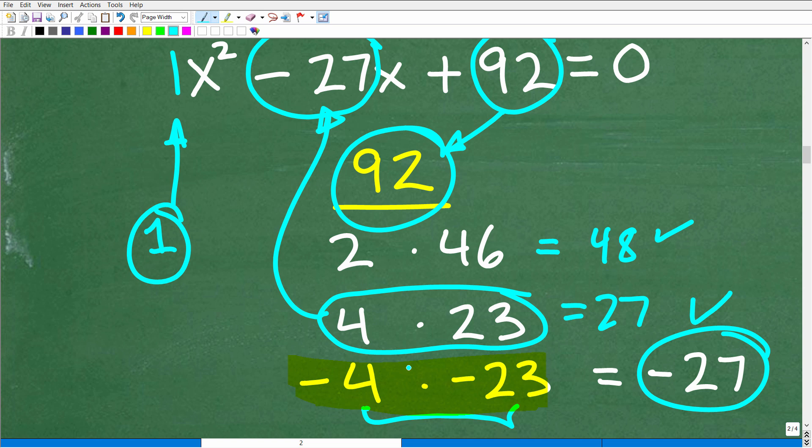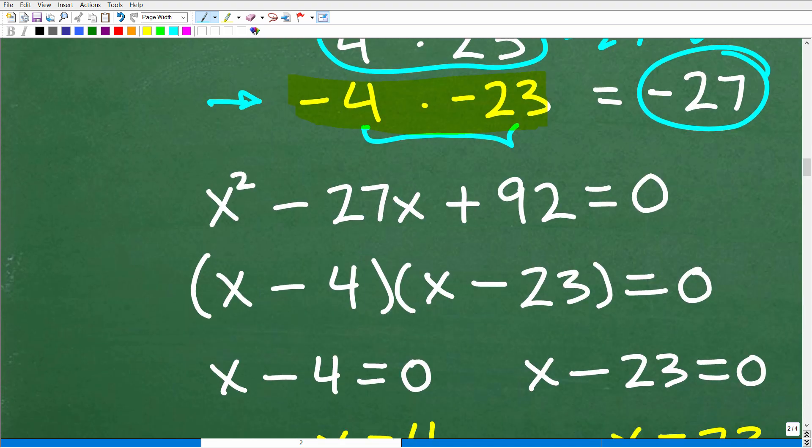But when I add these up, I get negative 27. So these right here are my, the answers to my factor. Okay. Or my factors, what we call linear factors. All right. So what does that mean? Well, negative four and negative 23 add up to negative 27, which is that middle term.